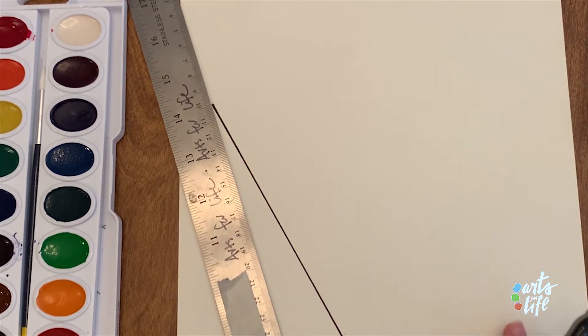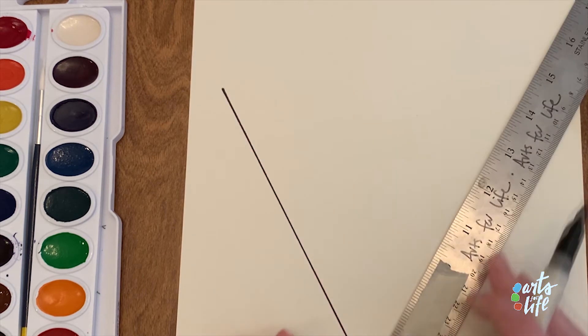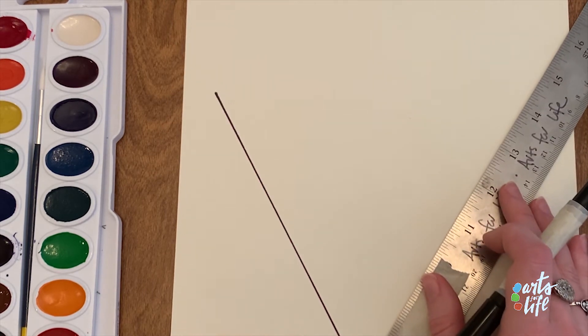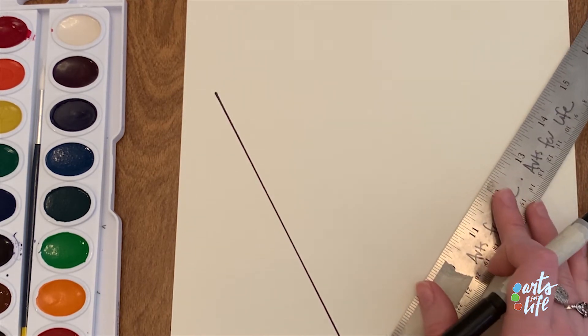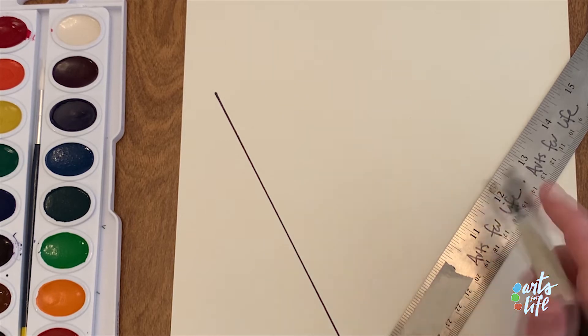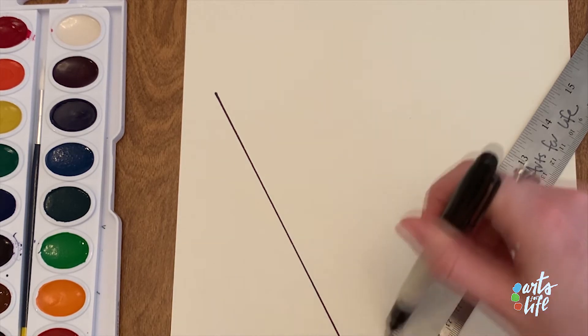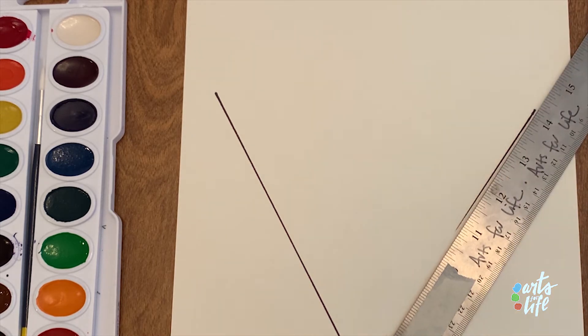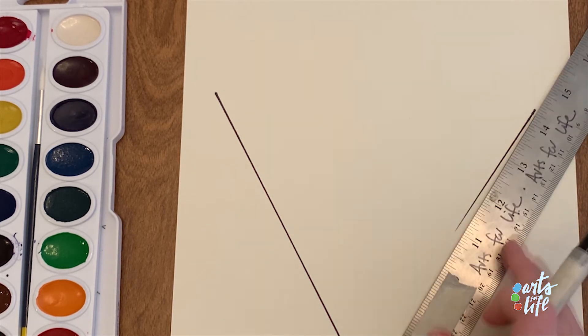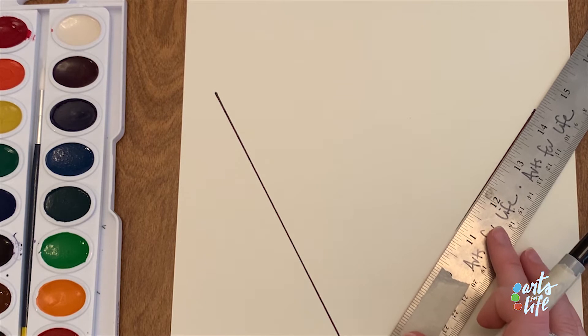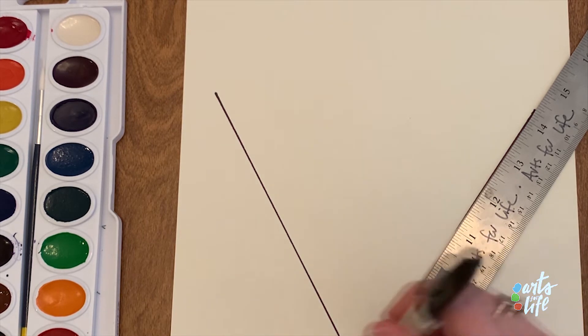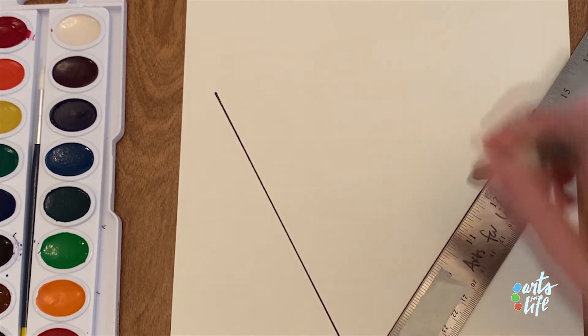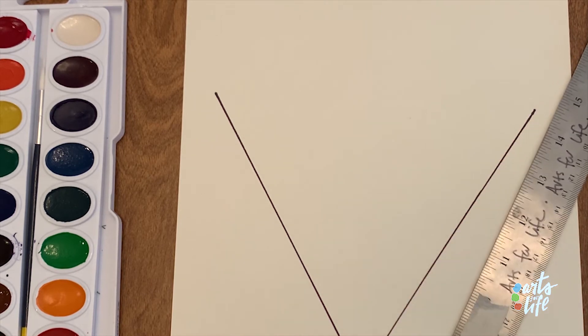Now I'm going to do the same thing on the right side now. So I will use my ruler, kind of map out where I want my next line to go, and then draw it right there. You see sometimes the marker doesn't touch all the way so I'm just going to go over it one more time. There we go.